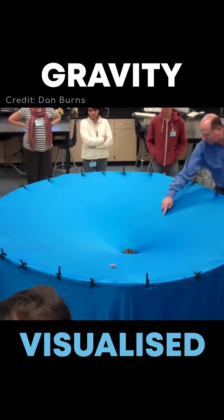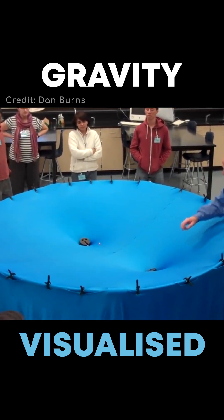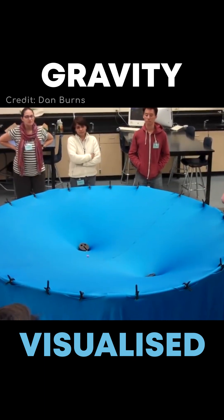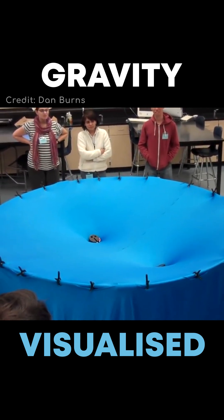This mimics gravity in our solar system really well. You can imagine these balls as objects or planets orbiting our Sun. Although, the difference in the solar system is that there is no friction in space, they don't lose energy, so they keep orbiting.